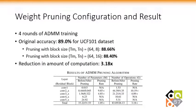Here are our experiment configurations and results. The ADMM pruning is performed for 4 rounds. The accuracy of the original R2+1D model on UCF-101 dataset is 89%. We adopt two block configurations, namely 64×8 and 64×16. The accuracy loss of pruned sparse models is negligible. The R2+1D network contains 5 layer blocks, and we only prune the most computation-intensive layers in the 2nd and 3rd blocks. With up to 10× compression rate for a layer block, we achieve an overall compression rate of 3.18× for the whole model.